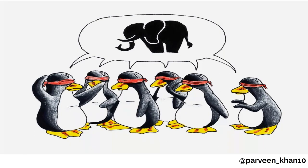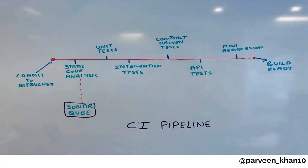Each member of the team understood a particular part of the overall concept, and by sharing our knowledge we built our own picture from everyone's perspective. We had to answer the why, what, and how of continuous integration and DevOps. We all came together and built that picture in the form of pipelines and processes. At the end we settled on one single pipeline: static code analysis → unit testing → integration tests → contract-driven tests → API tests.